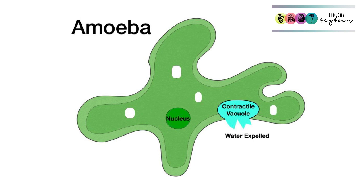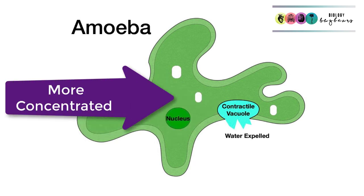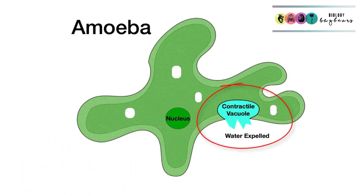Freshwater amoeba have a serious problem with controlling water content, or osmoregulation, because their cytoplasm is more concentrated than the environment in which they live. So water will constantly try to enter the amoeba. For this reason, the amoeba uses a structure known as the contractile vacuole. It fills up with excess water and eventually gets so large that it fuses with the membrane of the amoeba, bursts, and expels the water — and this continually happens. If it didn't, the amoeba would simply burst.